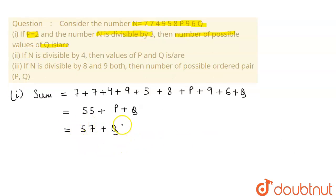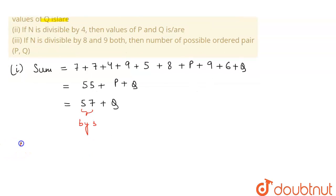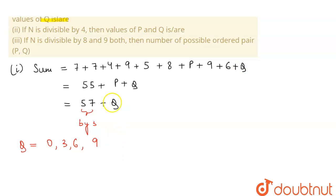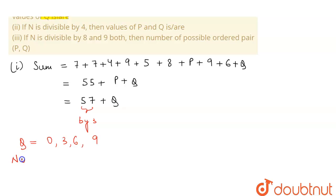The number 57 plus q should be divisible by 3. Since 57 is already divisible by 3, q must also be divisible by 3 for the sum to be divisible by 3. The possible values of q are 0, 3, 6, and 9, since these are all single-digit numbers divisible by 3. So the number of possible values of q is equal to 4.